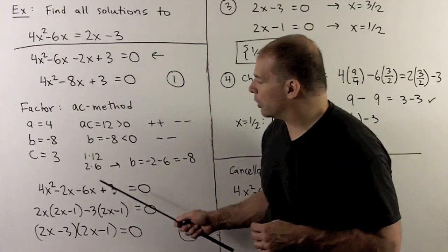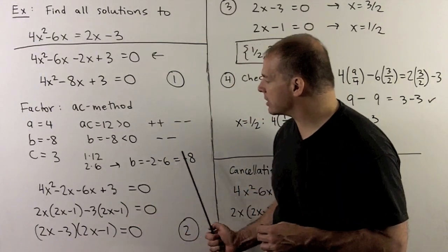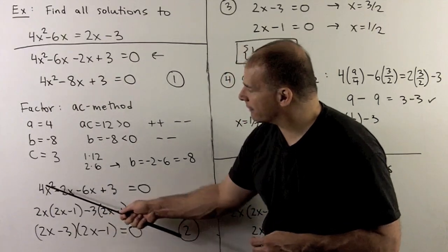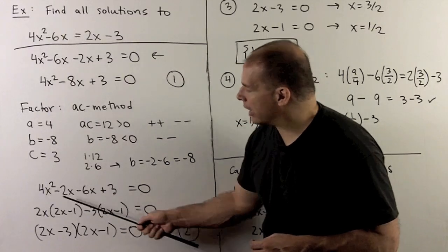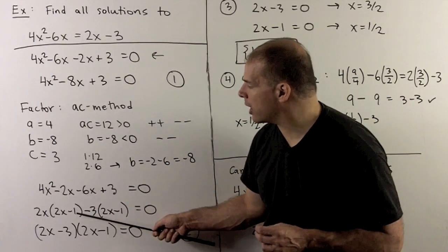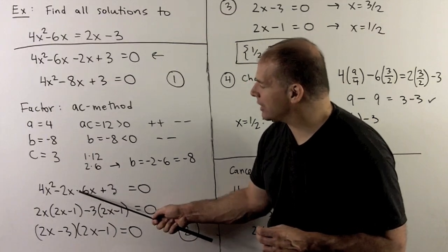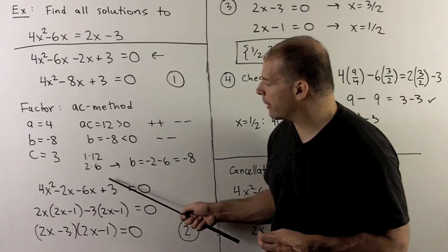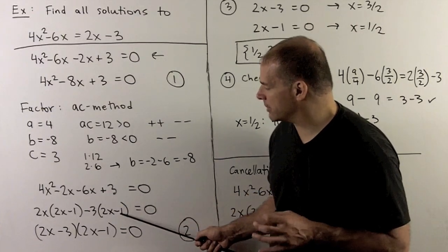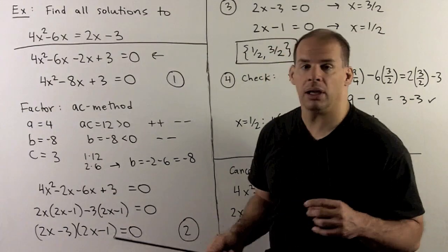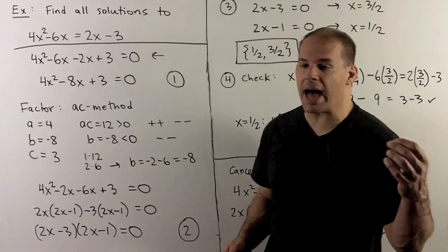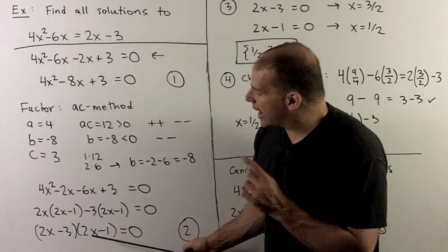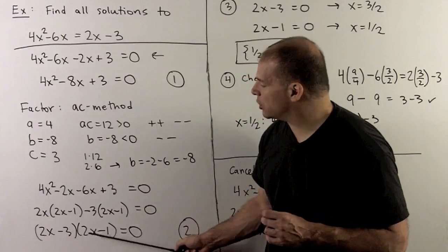Now, by that I mean I rewrite it as 4x squared minus 2x minus 6x plus 3 equals zero. We apply grouping to the first two terms and the last two terms. I can pull 2x out of the first two, which leaves me with a 2x minus 1. In the last pair, I'm going to pull out a minus 3. 6x goes to a 2x, the 3 goes to a minus 1. So just remember when I pull out a negative, that plus also becomes negative. Now, the 2x minus 1s match, so grouping applies. We factor that out and I'm left with a 2x minus 3. So we have the equation now, 2x minus 3 times 2x minus 1 is zero.